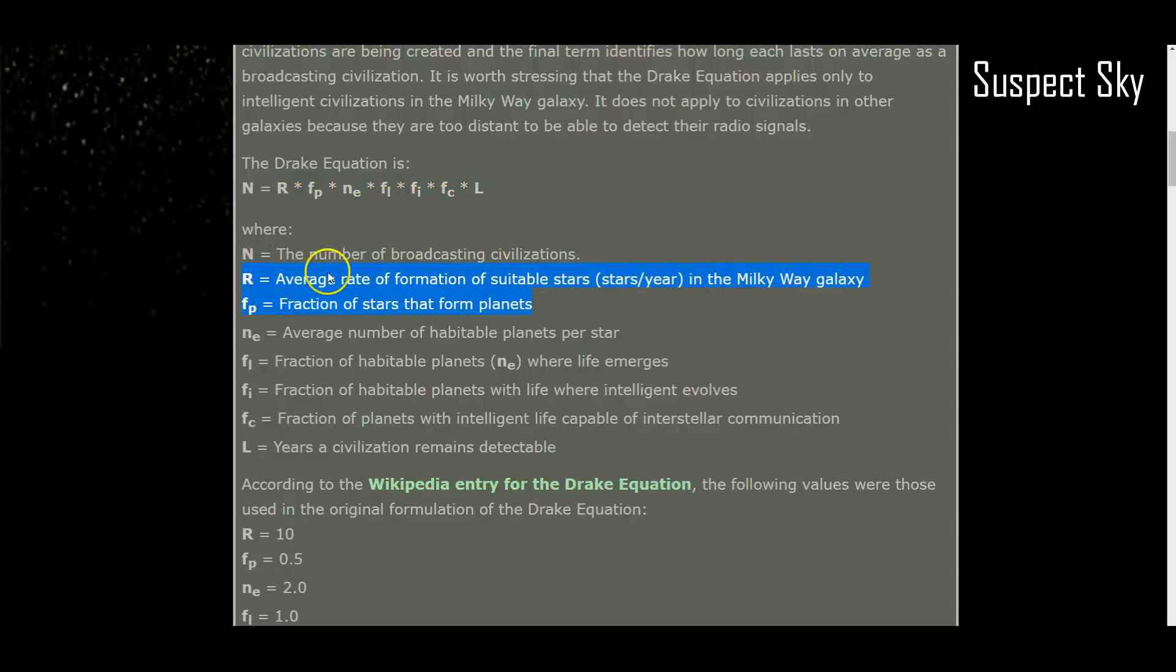Here are the different variables involved in that equation. R is the average rate of stars to form, the fraction of those stars that create planets, the average number of habitable planets that are created per each of those stars, and then it goes down through a number of other variables. But what both of these satellites are going to be able to do is really pin down these two variables: the fraction of stars that form planets and the average number of habitable planets per star.